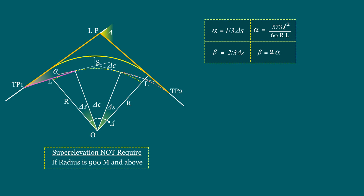The eleventh step is finding the polar length or chord length of the common tangent point from tangent point 1, denoted as b. The formula: b = 3r·sin(two-thirds of delta s). Now let us fix the common tangent point. The twelfth step is finding the rate of change of radius in the true spiral, which is a constant value denoted as k. The formula: k = √(3br).